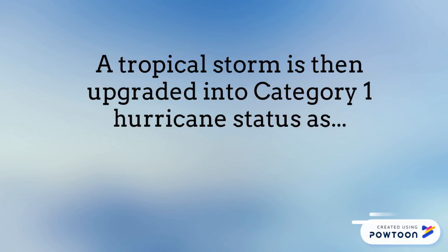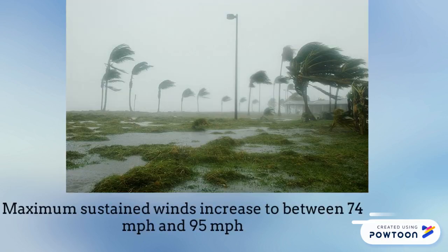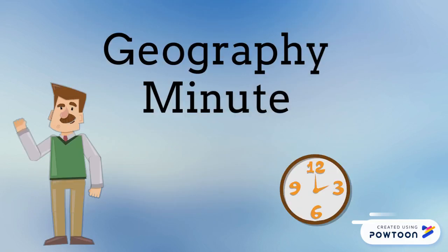A tropical storm is then upgraded into a Category 1 hurricane as maximum sustained winds increase to between 74 mph and 95 mph. I hope this has helped, because that's your Geography Minute.